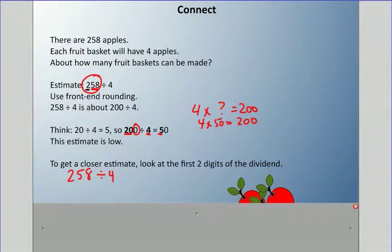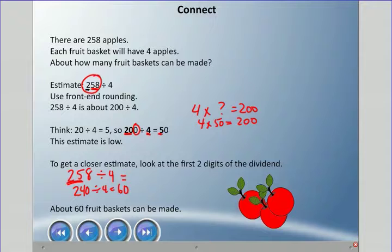The first two digits are 25. Is there anything we can think of about 25 that's close to something that divides evenly by 4? What I thought of is 24. So 24 divided by 4 equals 6. Now the answer is not going to be 6 because we had 50 before. If we add a zero here for 240, this will become a 60. So 240 divided by 4 is 60. That is a lot more accurate. We've only gone down 18 apples rather than 58. It's still an underestimate, but about 60 fruit baskets could be made.